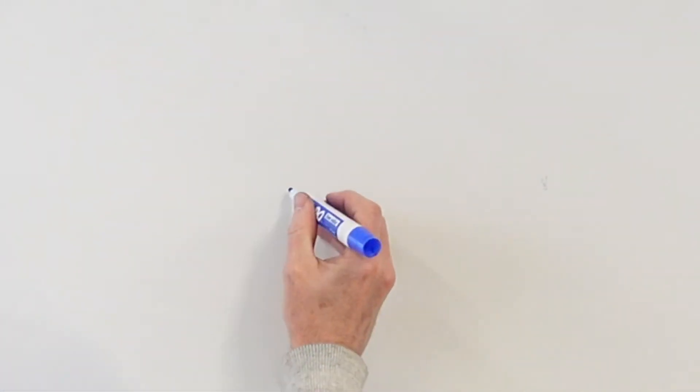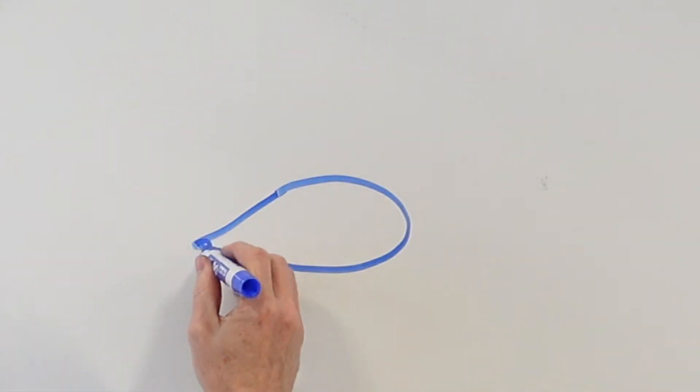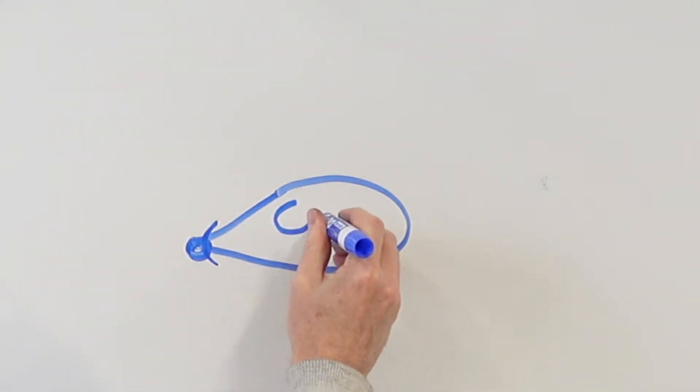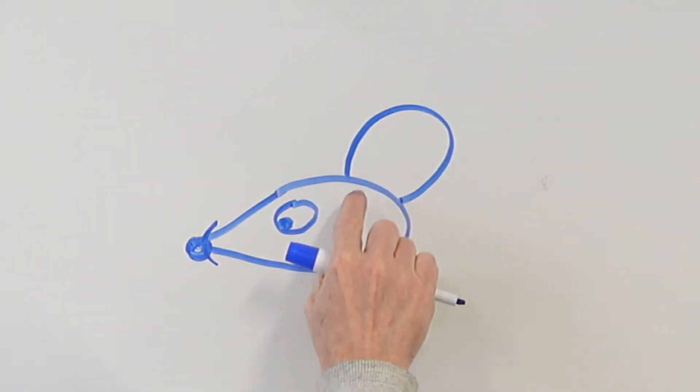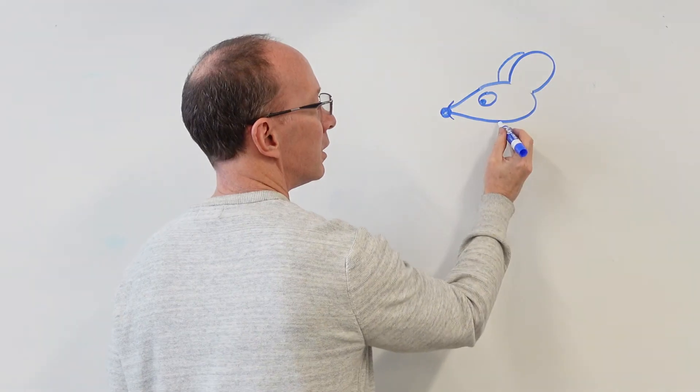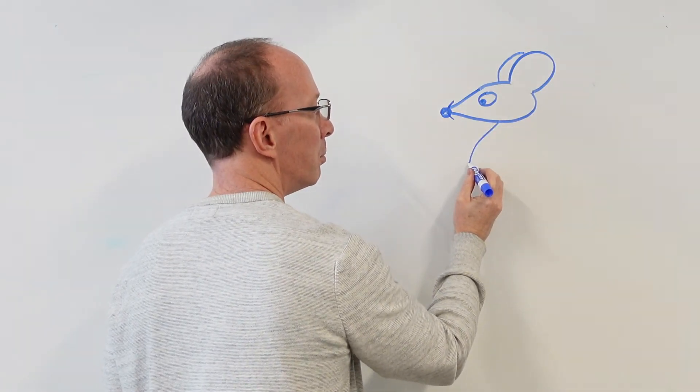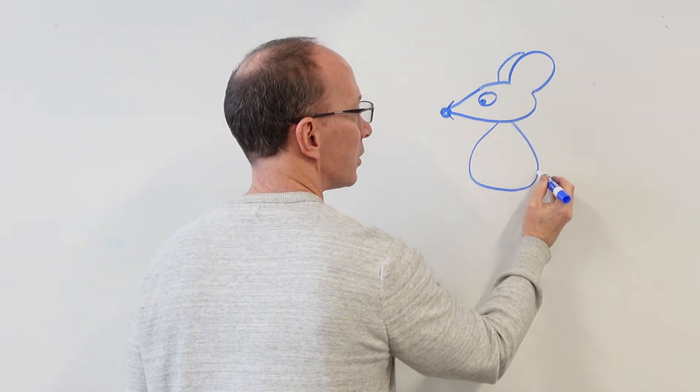We'll draw one more. Make that teardrop. Put the nose on there. Make an eyeball. I think I might just have a big old cartoon eye right here. Draw a big ear on the back. Erase this line so it kind of fits into your mouse. Draw the back ear. Draw a big old belly on this one.